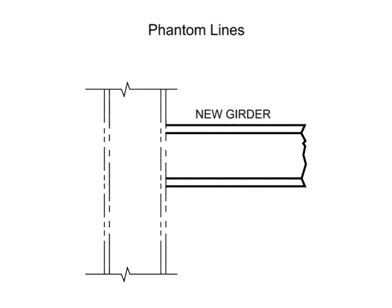The second way phantom lines are used is to illustrate the position of related parts to better show how the part interfaces with existing or missing parts.